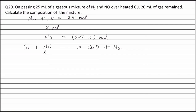We can write: 1 × moles of nitric oxide (x) = 2 × moles of nitrogen. Therefore, moles of nitrogen = x/2 moles, or equivalently, the volume of nitrogen produced from nitric oxide is x/2 ml.